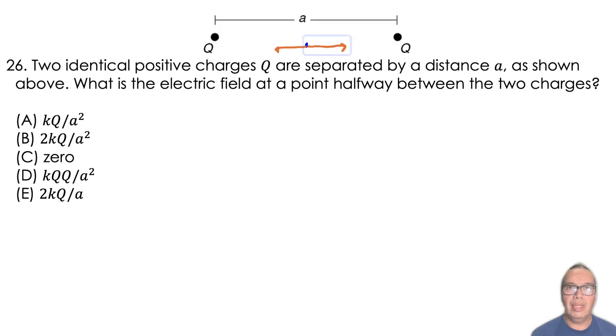Therefore, the field caused by the left-hand side particle is positive kQ/(A/2)² î, while the field caused by the right-hand side particle is negative kQ/(A/2)² î.